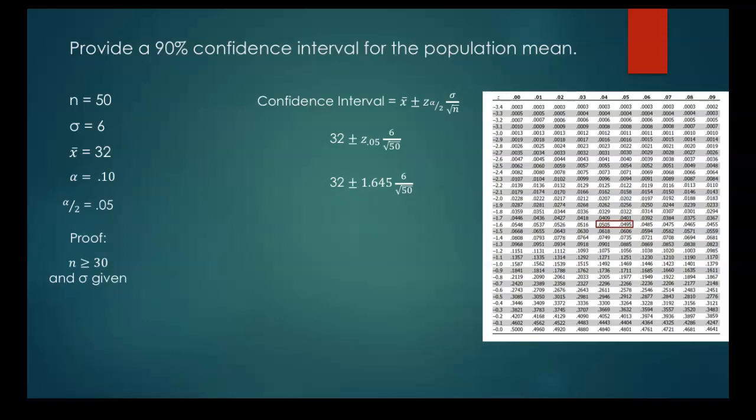So we can now take that z-score and multiply it by our standard error, which gets us this 1.4. Now 32 plus and minus 1.4 gives us our confidence interval here of 30.6 to 33.4. So we are 90% confident that the population mean would be somewhere between 30.6 and 33.4.